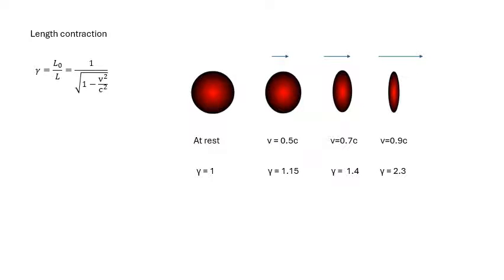Length contraction is another consequence. The formula is γ = L₀/L — where L₀ is the rest length (longer) and L is the contracted moving length (shorter). Distances in the direction of travel get shorter as you move faster. A sphere at rest becomes progressively flattened horizontally as speed increases. Again, gamma equals the big (rest) length divided by the smaller (moving) length.